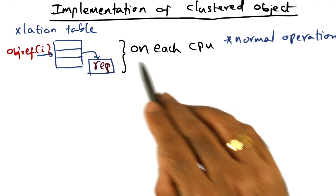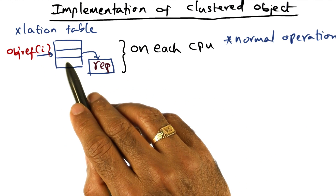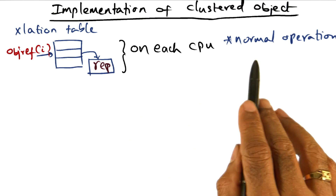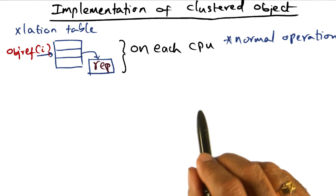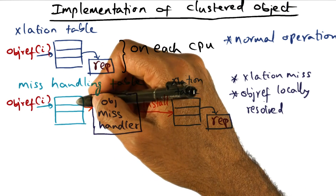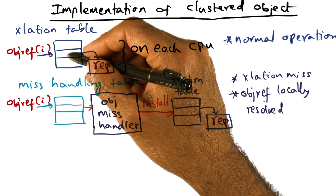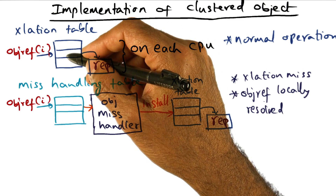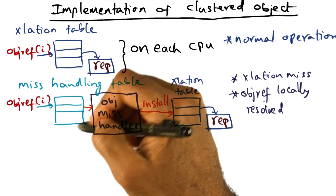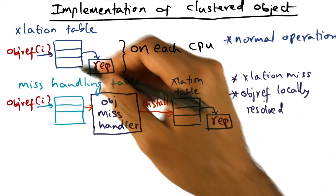So on each CPU, this is what happens. When an object reference is presented, the operating system converts it to a representation, and this is a normal operation. Now, you present an object reference, but that object reference may not be in the translation table yet because this object has not been referenced so far. In that case, you'll have a miss in looking up the translation table.